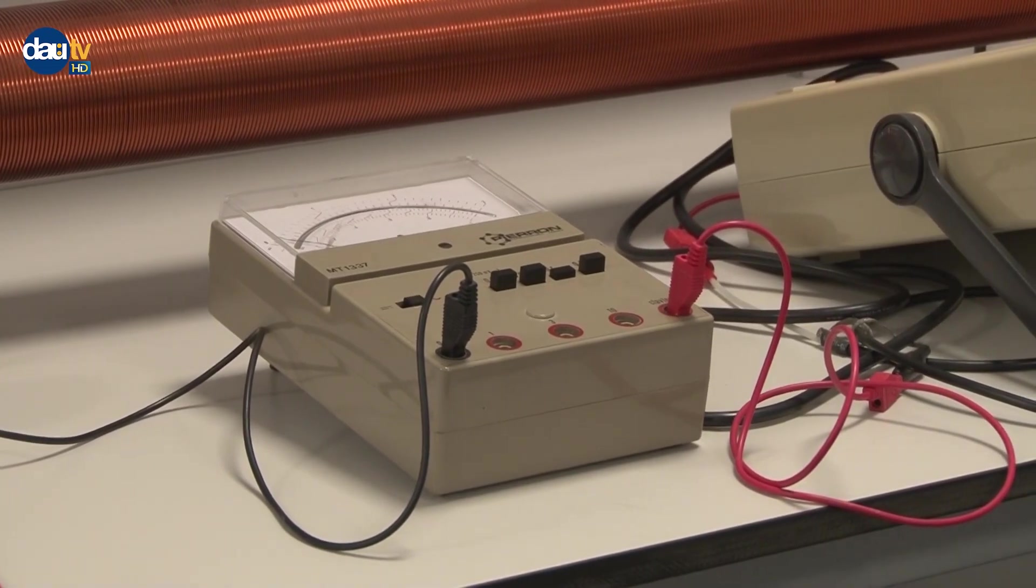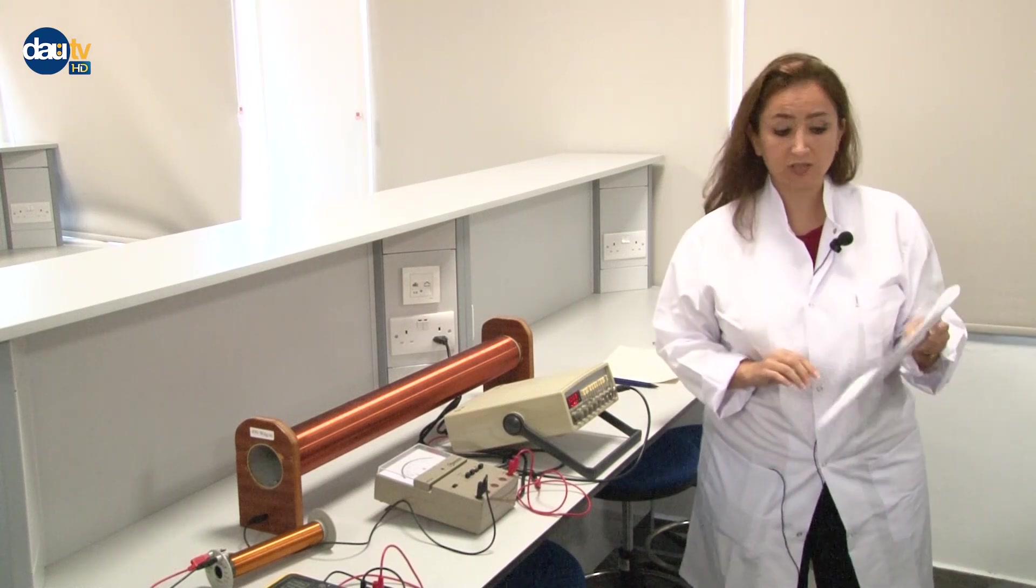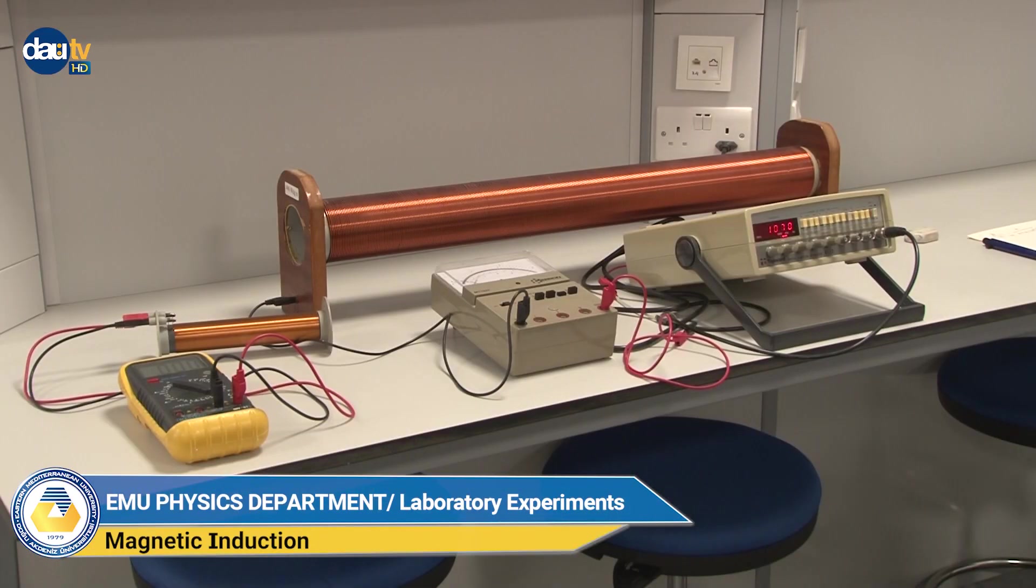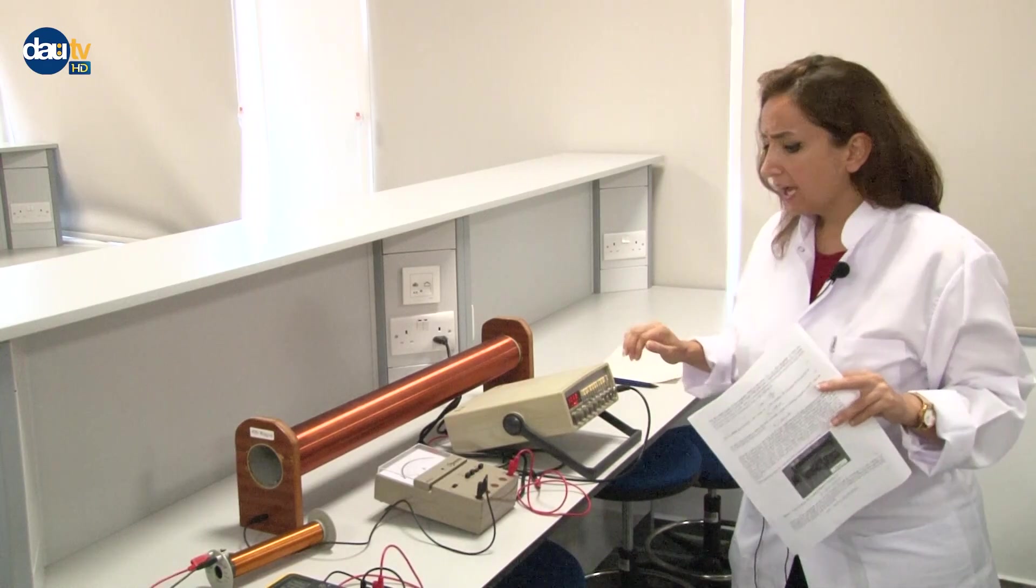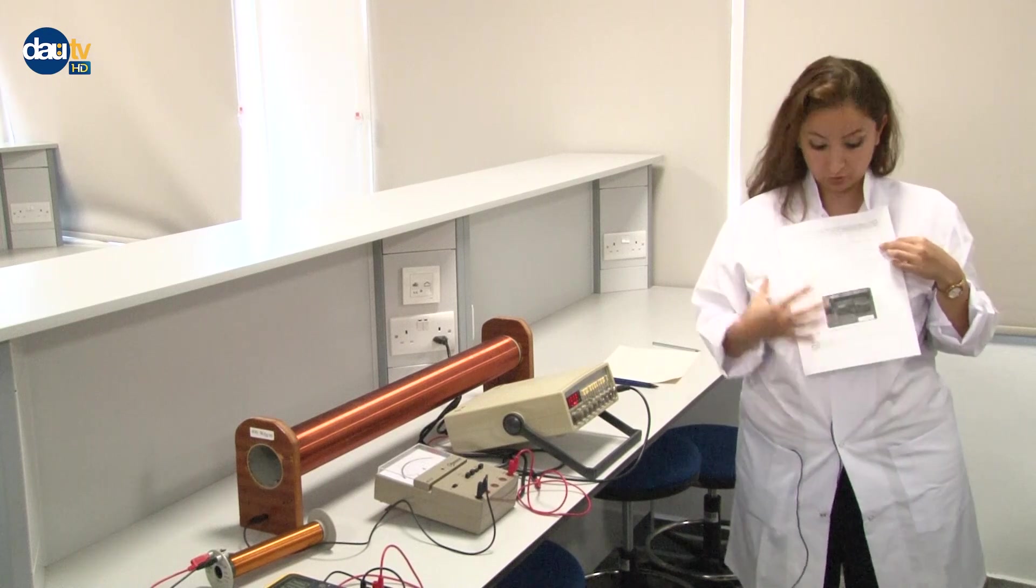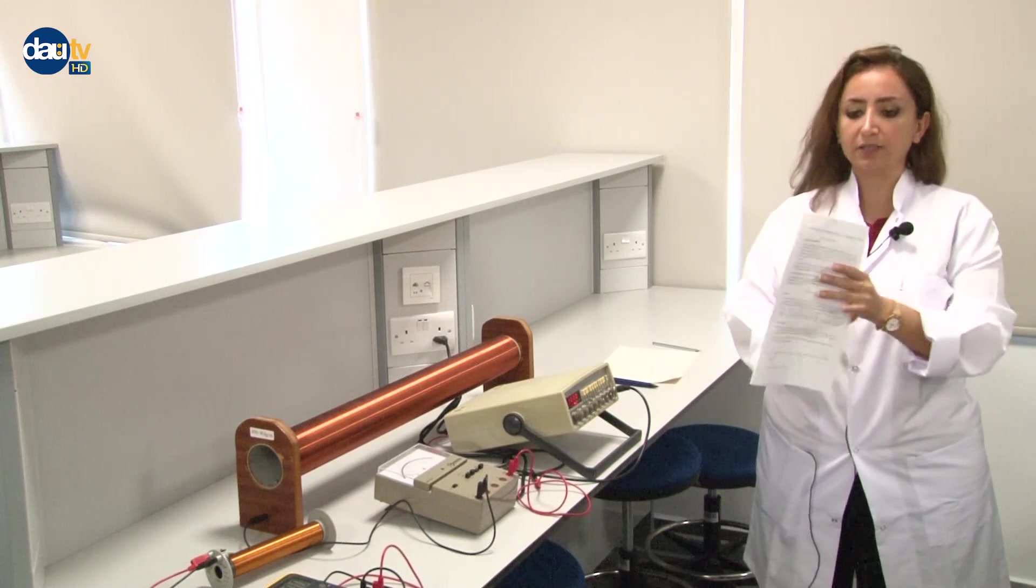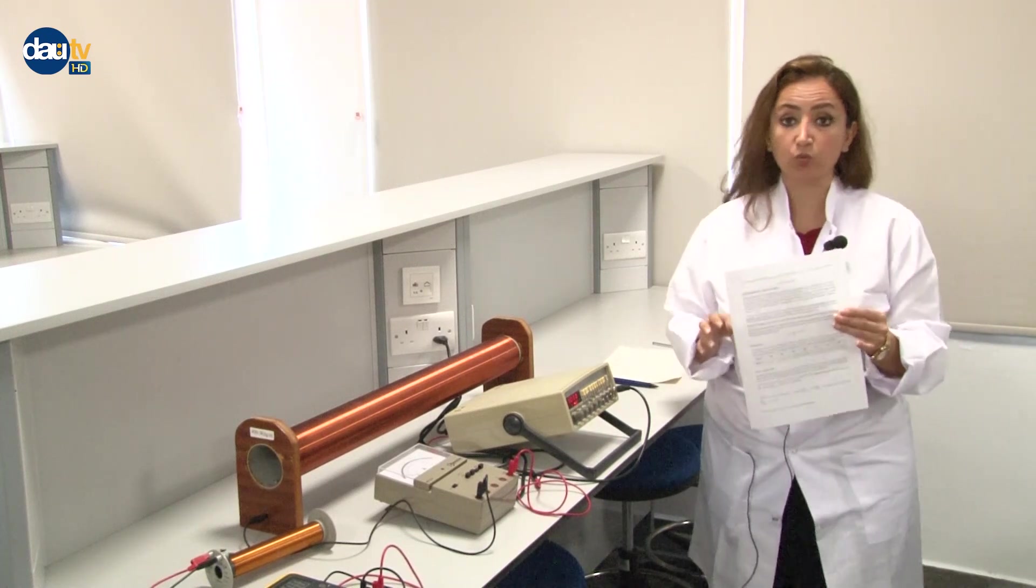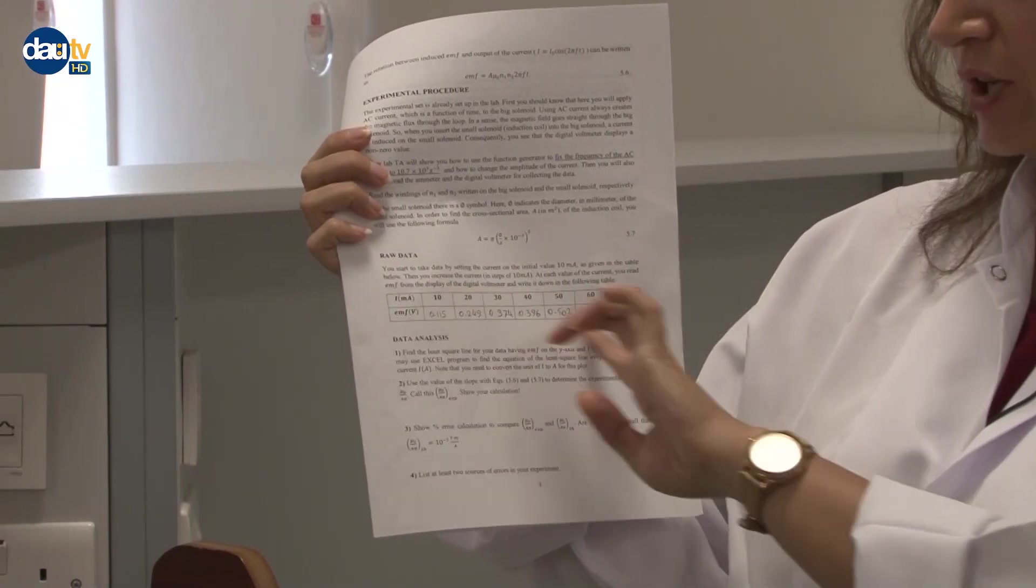According to the explanation of the manual, it's written that it adjusts the frequency as 10.7 times 10 to the power of minus 3. We adjust it. It's fluctuating between 10.69 and 70. According to the manual, the first and second page is the theoretical part, which I've explained on the board. And the third page is related to the experiment that we want to collect our data.